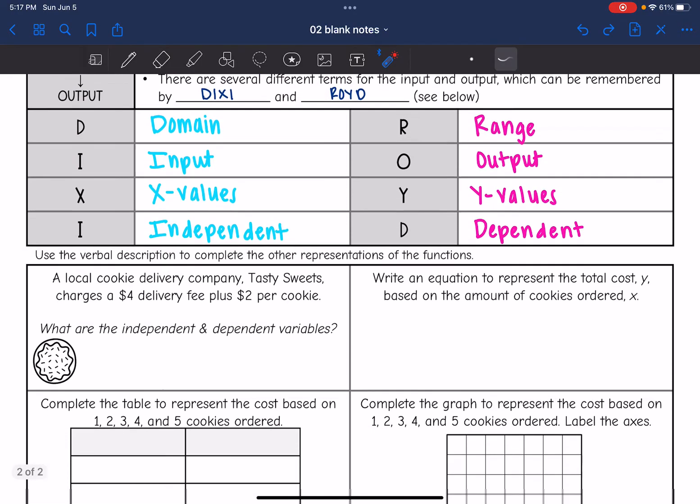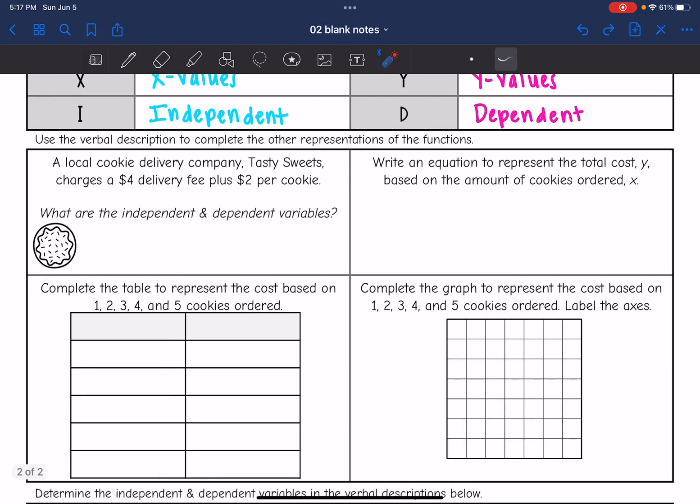So let's take a look at the first example. It says use the verbal description to complete the other representations of the function. A local cookie delivery company, Tasty Sweets, charges a $4 delivery fee plus $2 per cookie. And the question it wants us to answer is what are the independent and the dependent variables?